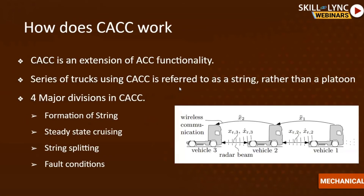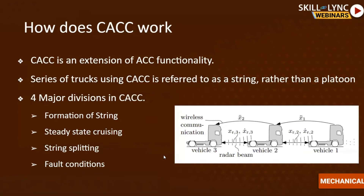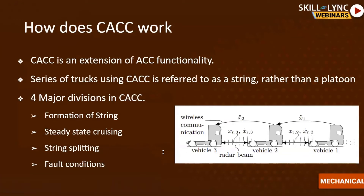The slide illustrates three trucks with variables x-double-dot, x-dot, and x representing relative acceleration, relative speed, and relative distance between vehicle pairs. In platooning only distance is considered, whereas in CACC all three variables are factored in due to the constant time gap strategy. Also, vehicles in a platoon are called a platoon, while vehicles in a CACC system are called a string.